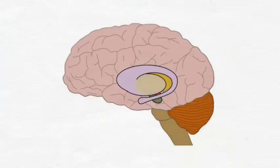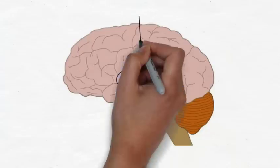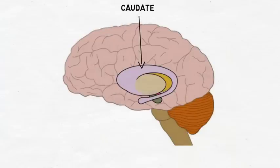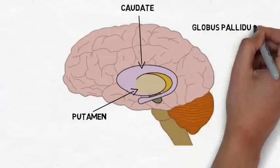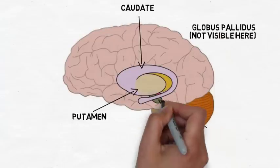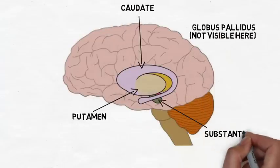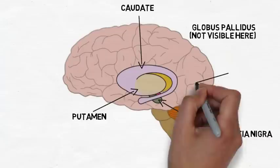The basal ganglia are a group of structures found deep within the cerebral hemispheres in the brainstem that include the caudate, putamen, globus pallidus, substantia nigra, and subthalamic nucleus.